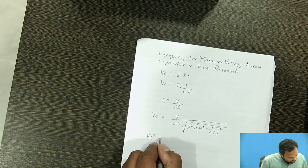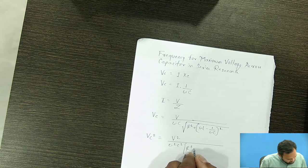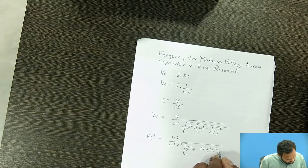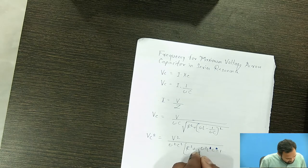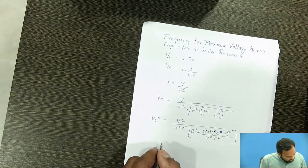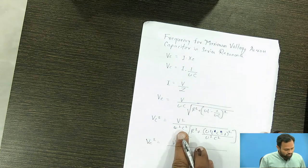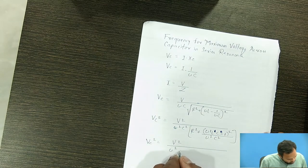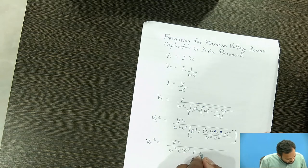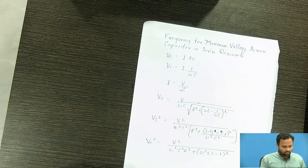If we take square on both sides, Vc squared is equal to V squared upon omega squared C squared, and in the bracket it is R squared plus omega squared LC minus 1, the whole bracket squared, upon omega squared C squared. After solving this bracket, Vc squared equals V squared upon omega squared C squared R squared plus omega squared LC minus 1 bracket squared, and multiplying through gives omega squared C squared R squared plus omega squared LC minus 1 bracket squared.